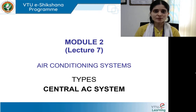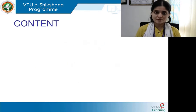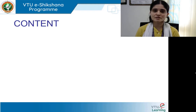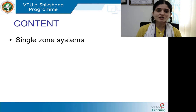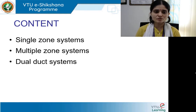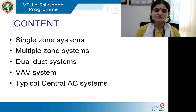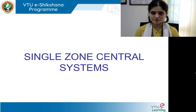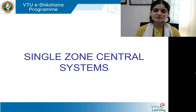This is module 2, lecture number 7. We have started the types under the types of air conditioning system. We completed unitary type. We are proceeding with the central air conditioning systems. Under that, we have done the last session. We just started it off and now we are proceeding with understanding single zone, multiple zones, dual duct systems, VIV systems, and central AC systems — two types.